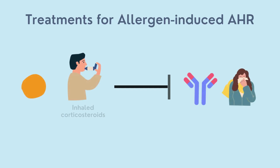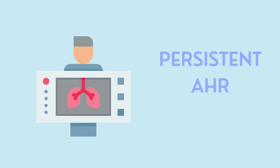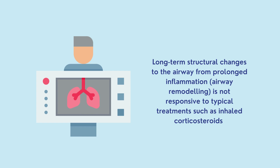Since this type of temporary AHR is associated with inflammation, anti-inflammatory cytokines such as IL-12 and inhaled corticosteroids are often used to inhibit and treat allergen-mediated or allergen-induced AHR. Persistent AHR, on the other hand, may be caused by prolonged inflammation from instances of short-term AHR, but is mainly characterized by chronic and generally irreversible structural changes that develop secondary to chronic or prolonged airway inflammation, also known as airway remodeling. This persistent AHR is not particularly responsive to typical anti-inflammatory treatments such as inhaled corticosteroids or environmental control that would be effective for allergen-induced AHR.